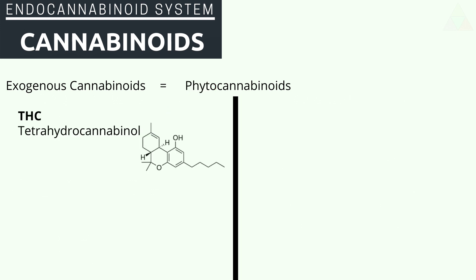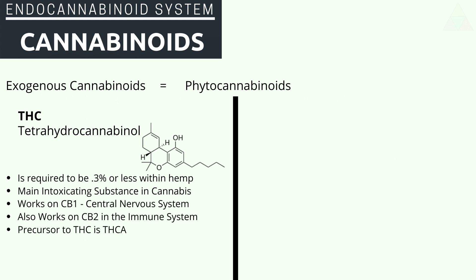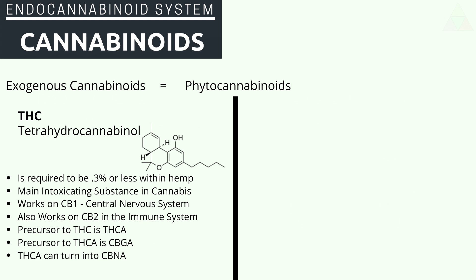Let's talk about these phytocannabinoids. THC, or tetrahydrocannabinol, in hemp is required to be less than 0.3% when tested. It is the main intoxicating cannabinoid in cannabis. It works on both the CB1 and CB2 receptors. The precursor to THC is THCA, and the precursor to THCA is CBGA. THCA can turn into CBNA, and THC can turn into CBN.